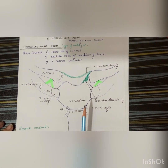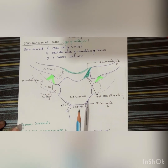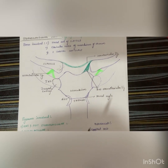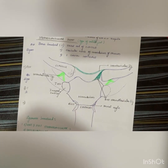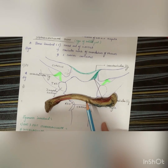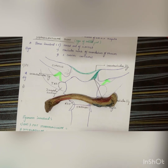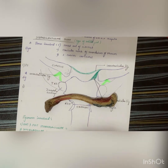Coming to the clinical importance of the clavicle: it is the most commonly fractured bone. The most common site of fracture is the junction between the medial two-thirds and lateral one-third of the shaft, because the fracture is lateral to the ligament. The cause of fracture may be an indirect force, like falling on an outstretched hand.